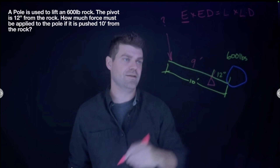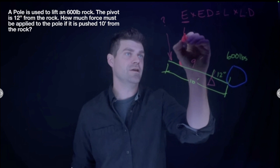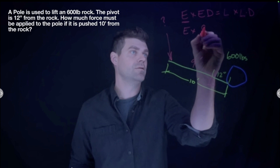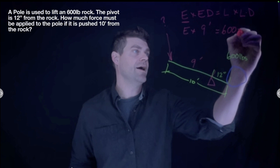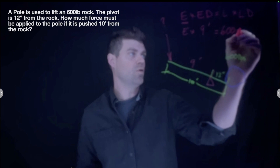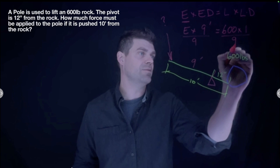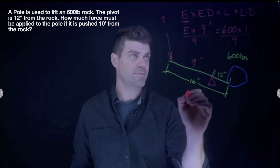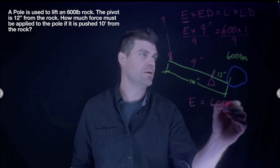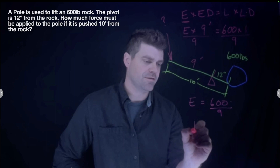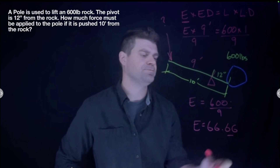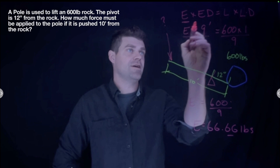Plugging into the formula: we're looking for Effort, with an effort distance of 9 feet. Our load is 600 pounds and our load distance from the fulcrum to the end of the pole is 1 foot. Moving things around to isolate Effort, we divide both sides by 9, giving us: Effort = 600 ÷ 9 = 66.67 pounds. That's how the formula works — Effort × Effort Distance = Load × Load Distance.